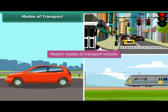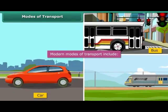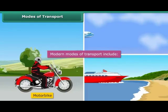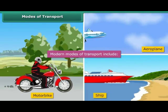As you can see, hence we now have cars, buses, roads, railways, motorbikes, aeroplanes, ships, etc. to travel.